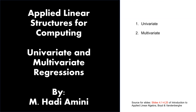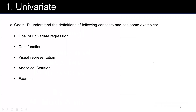In this lecture, we are going to talk about univariate and multivariate regressions. This is part one about univariate regression. The goals of this part are: understanding the definition and goal of univariate regression, understanding what a cost function is, the visual representation, some analytical solutions, and finally seeing an example for univariate regression.